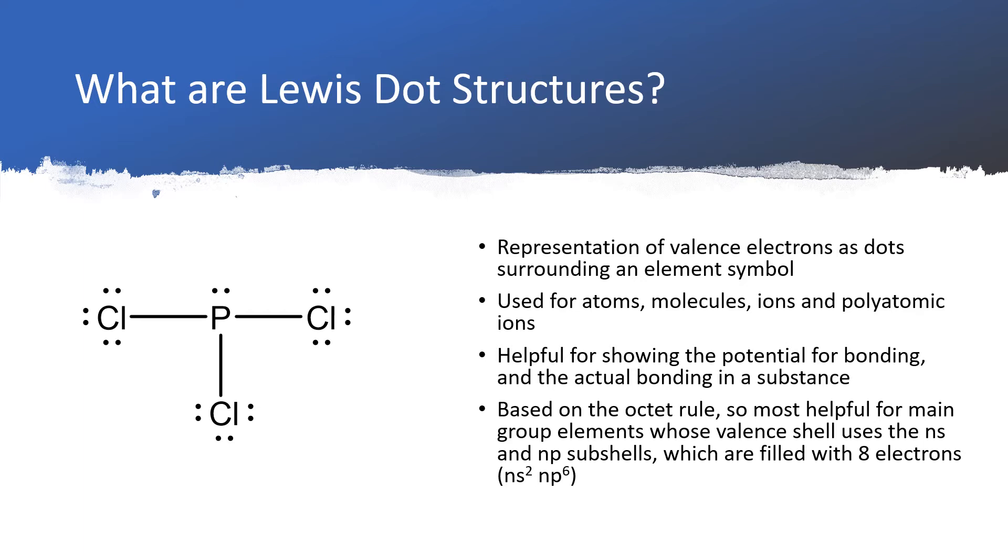The dots are always shown when we're talking about something called lone pairs, which are pairs of electrons that are not bonded. They exist just on a single atom.